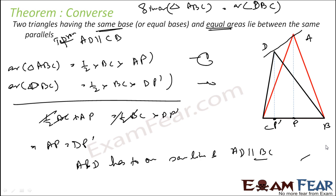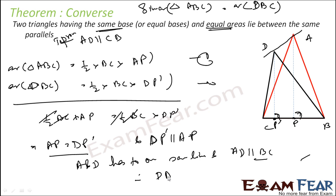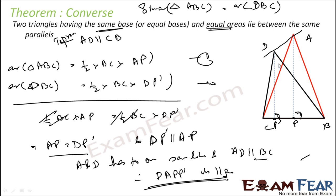We can also explain it this way: if DP is equal to DP dash, and DP is parallel to AP, then DAPP dash is a parallelogram, because DP is parallel to AP and DP dash is parallel to AP. If these two lines are equal and they are parallel, since they are both parallel to AP, P dash is parallel to AP. That is also one way of explaining it.